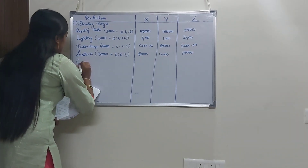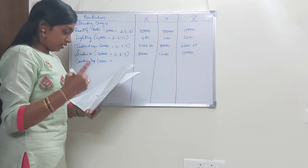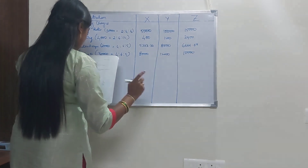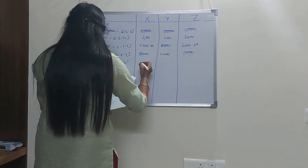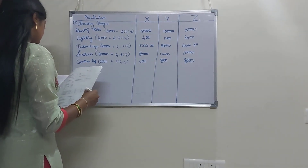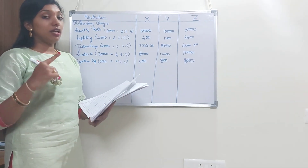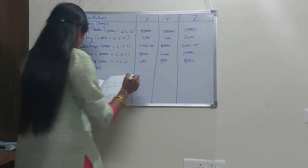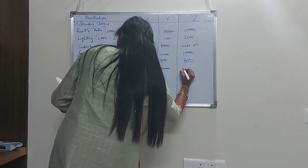Next, canteen expenses. Canteen expenses stand at 2,000 and we are going to apportion on the basis of number of workers. The ratio stands at 2:4:4 and the total amount apportioned in this ratio stands at 400, 800 and 800. After canteen expense, direct wages must also be considered in the calculation. Direct wages: the amounts are 40,000, 60,000 and 50,000.